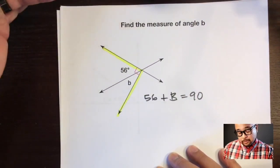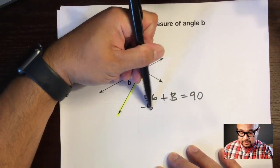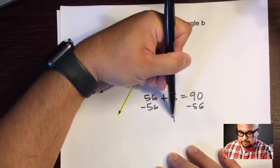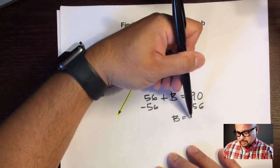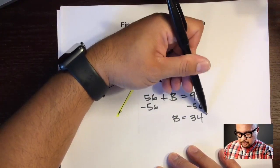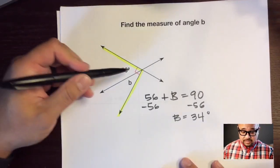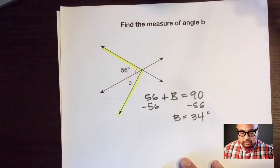We just do one thing: subtract 56 from both sides, and b equals 34 degrees. That's it. Or you could have just said, oh, I saw that these two angles add to 90, so subtract 56 from 90 and you'd still get 34 degrees.